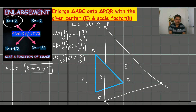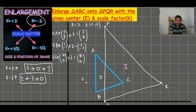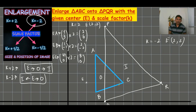When K is minus two, the image will move to the back side — that is very important. The position of the image is on the opposite side of the center. So I am going to use the second case, K is minus two, with center (2, 2) again.